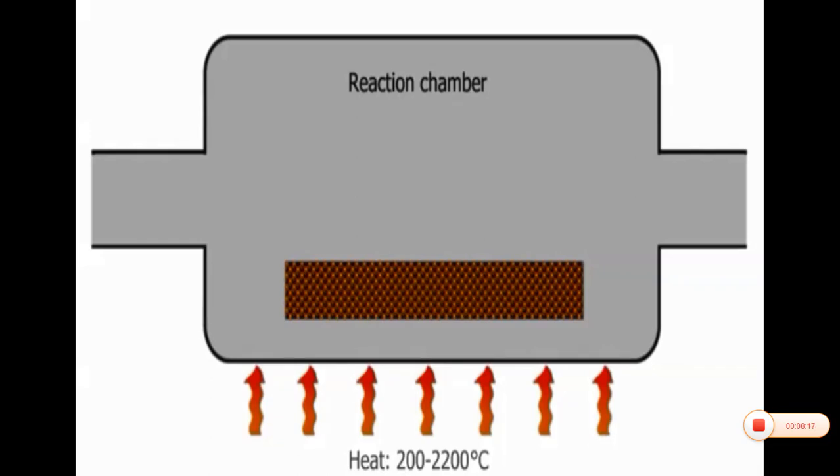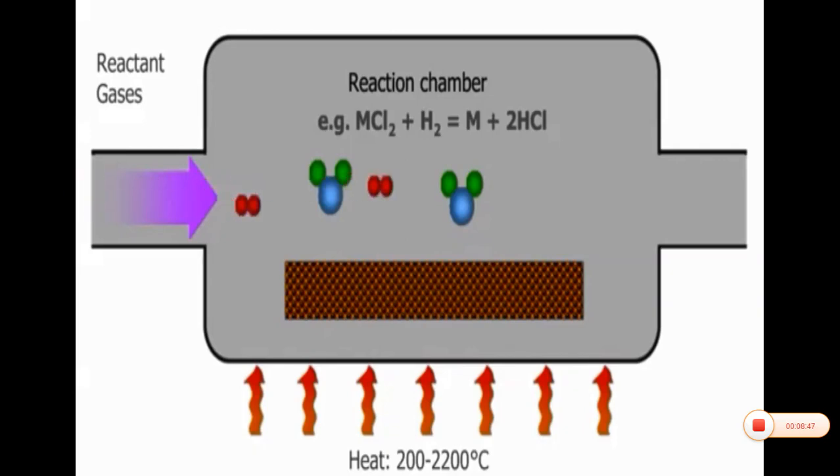Then a continuous flow of mixed reactant gases are introduced into the reaction chamber. In this example, metal will be deposited on the substrate from metal chloride gas. Metal is shown by blue atoms while chlorine is shown by green. Metal is combined with chlorine to form a compound that can be maintained as gas. At the same time, we introduce a continuous flow of hydrogen gas illustrated by red atoms.